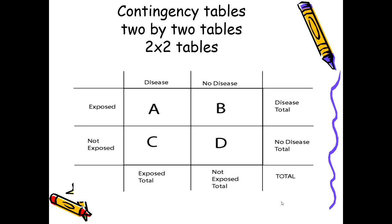Moving to another type: the contingency table, or 2x2 table. Disease and no-disease status is placed in columns, and exposed and non-exposed status is placed in rows. We formulate four columns and four rows, making row totals, column totals, and a grand total. These tables are generated in cohort studies, case-control studies, experimental studies, and analytical cross-sectional surveys, and are very important for biostatisticians and epidemiologists.